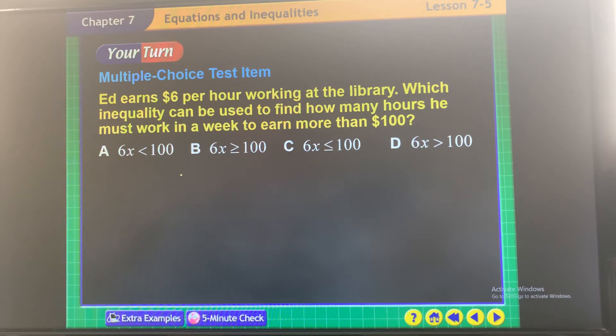Ed earned $6 per hour working at the library. Which inequality can be used to find out how many hours he must work a week to earn more than $100? So this one will be D. He wants more than, he doesn't want $100, he wants more than.